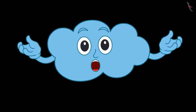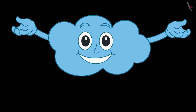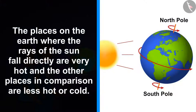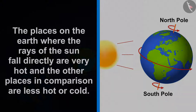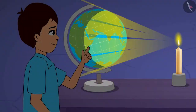Friends, the children are thinking correctly. The places on the earth where the rays of the sun fall directly are very hot, and the other places in comparison are less hot or cold. When we spin this globe like the earth and use the candle as the sun, we can see how sunlight hits different parts of the earth unevenly.